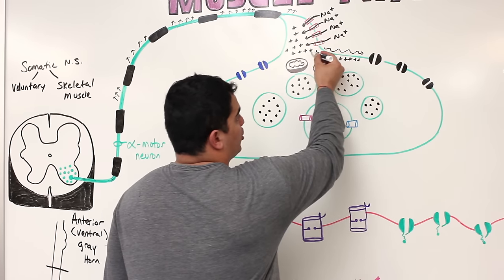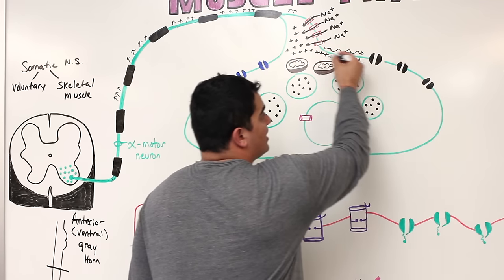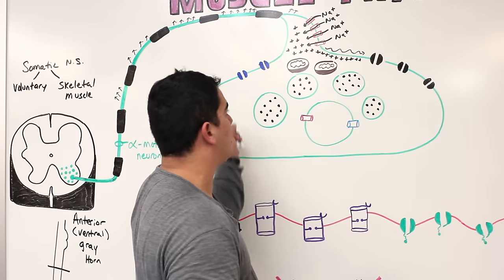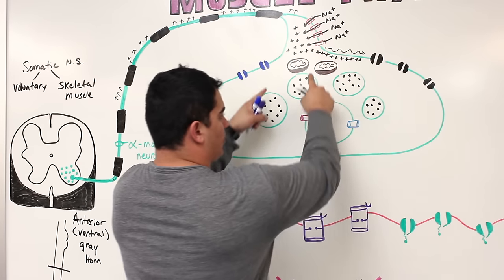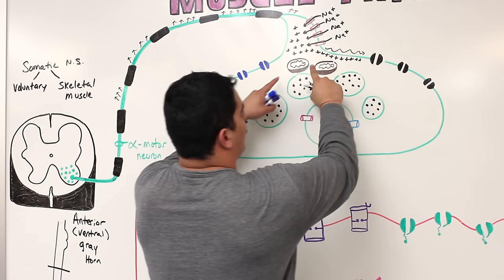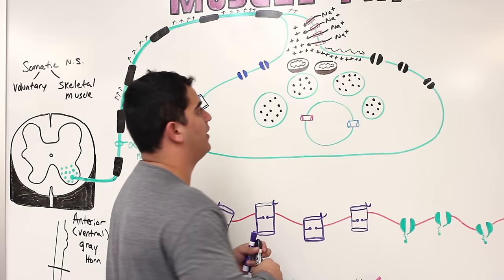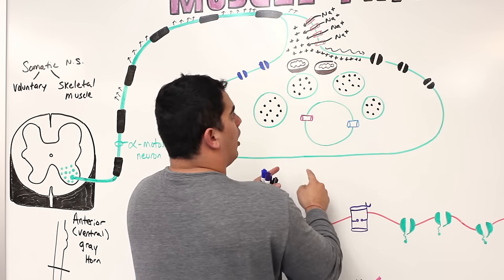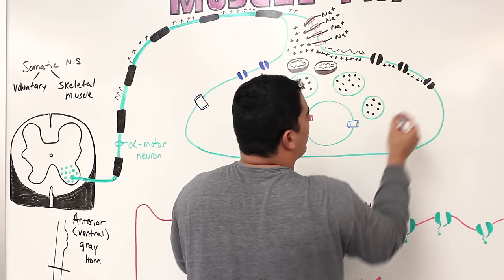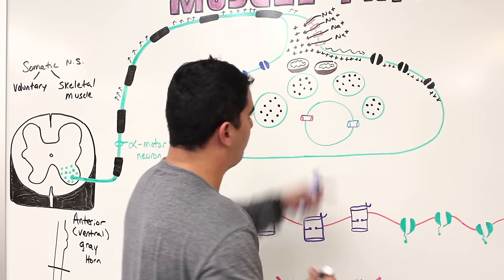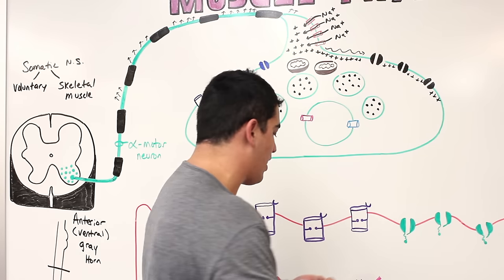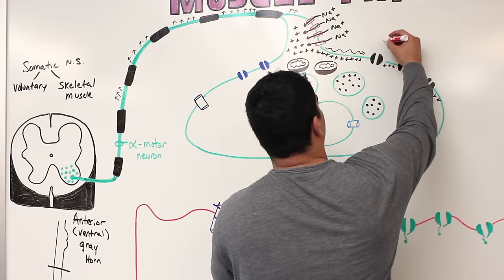As the action potential reaches this large knob-like structure at the end — called the axon terminal or synaptic bulb — the positive charges flowing across the cell membrane stimulate these black protein channels, which are very special. As the positive charges flow across the axoplasmic membrane, they activate a voltage-gated channel specific to a special ion: calcium.